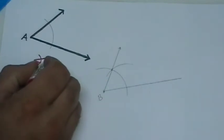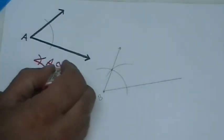We can say that angle A is congruent to angle B.